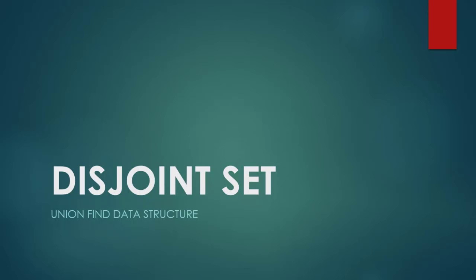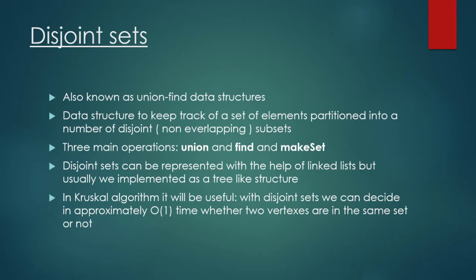In this video we are going to talk about the theoretical background for the so-called disjoint set, or the union find data structure. It is a data structure to keep track of a set of elements partitioned into a number of disjoint, non-overlapping subsets.